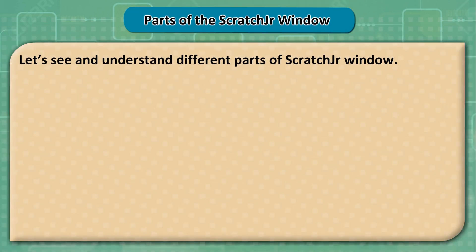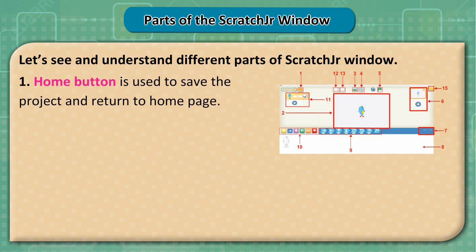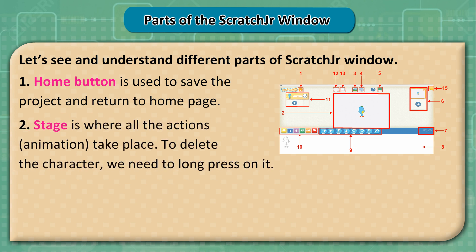Parts of the ScratchJunior window. Let's see and understand the different parts of the ScratchJunior window. 1. The Home button is used to save the project and return to the home page. 2. The Stage is where all the actions and animations take place. To delete a character, you need to long press on it.